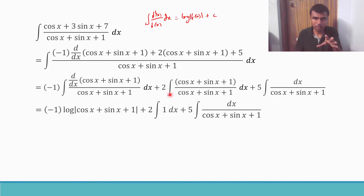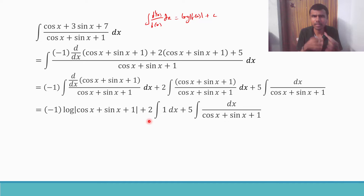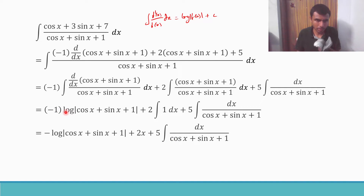Then the second term: since the numerator and denominator of (cos x + sin x + 1) over (cos x + sin x + 1) cancel, we get integral of 1 dx, which is x. So that term gives 2x. The remaining term is 5 integral of dx over (cos x + sin x + 1), which we'll integrate separately.